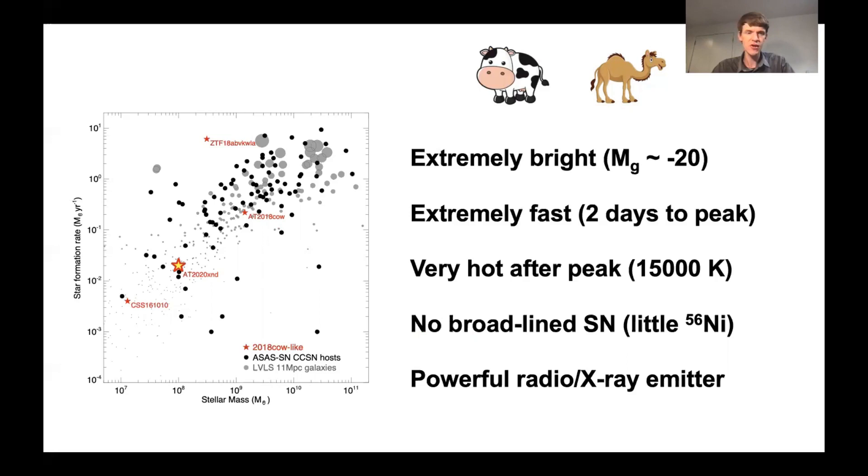However, many mysteries do remain to be solved about exactly what these are. Our favorite interpretation is that these are representing failed collapses of massive stars directly to a black hole, which then produces a jet, but the story is not yet certain.